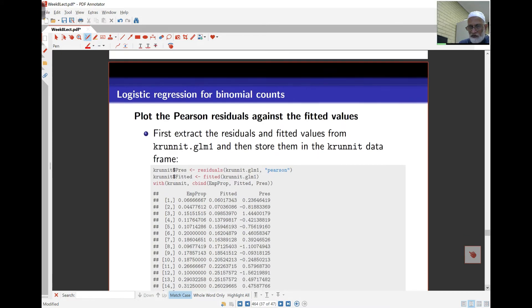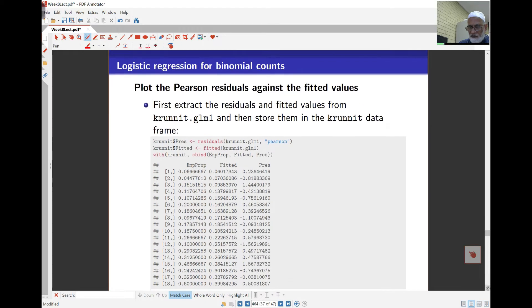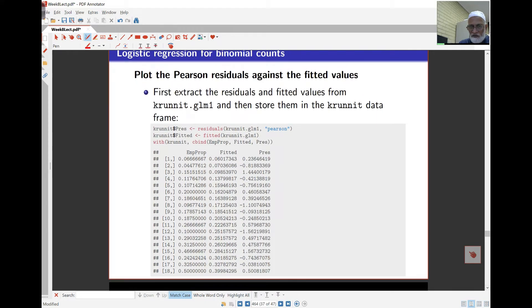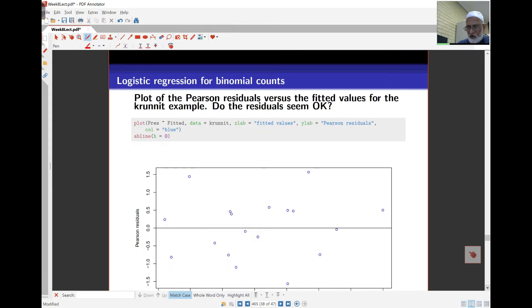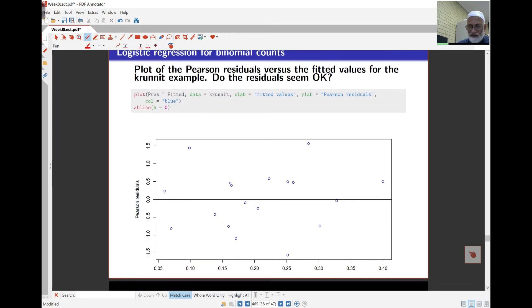And I can plot them. So we can extract these and put them in the data structure here, data frame. We've got residuals here from the object, the linear model object. We've said that the type is Pearson. And I've got the fitted values. I've got in this case the empirical proportions and the fitted values and the Pearson residuals all together. So I can plot these out in the usual way. I've got a plot of the Pearson residuals against the fitted values.